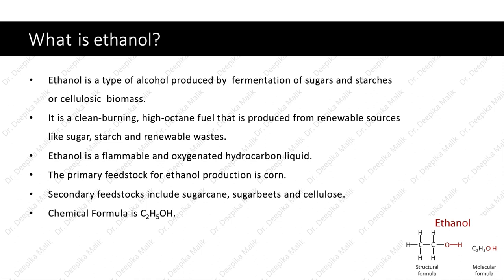Ethanol is a flammable and oxygenated hydrocarbon liquid. The primary feedstock for ethanol production is corn. Secondary feedstocks include sugarcane, sugar beets and cellulose. The chemical formula for ethanol is C2H5OH.